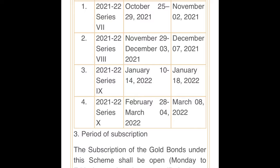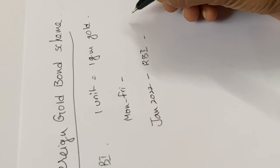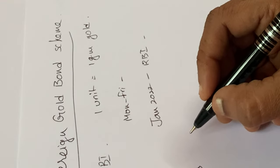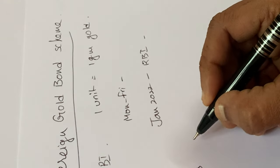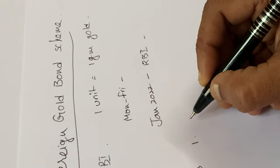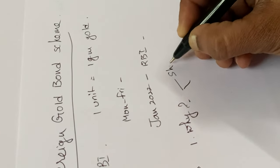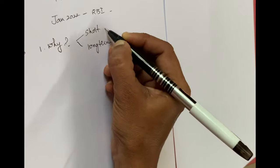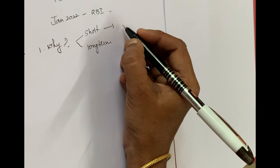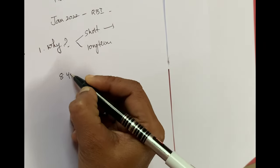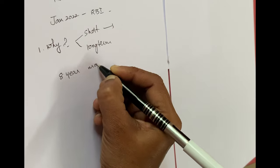When the RBI announces the opening in January, we can subscribe to these bonds. Now, why do we invest in these bonds — short-term or long-term? Short-term means one or two years, but the maturity for this scheme is 8 years.